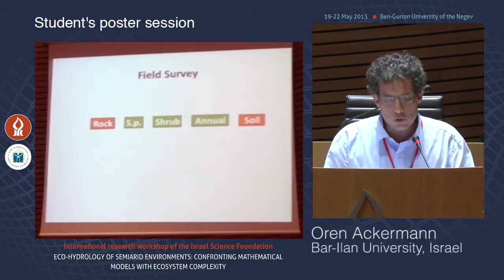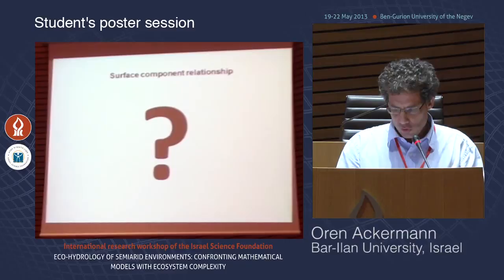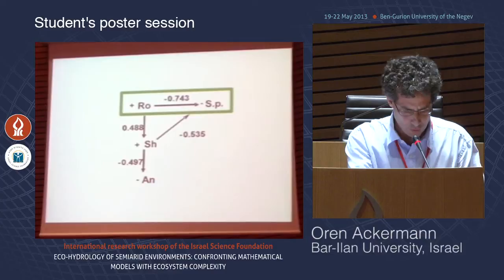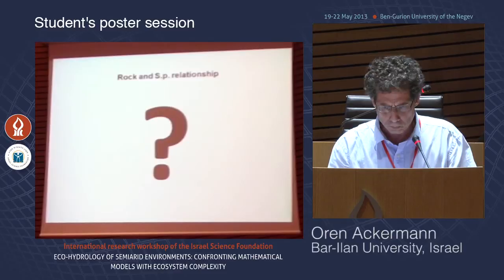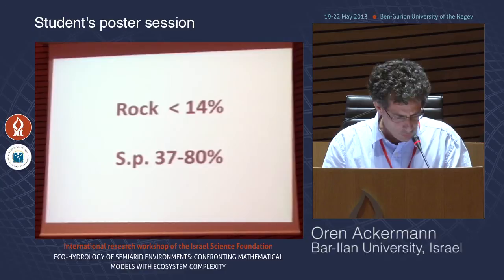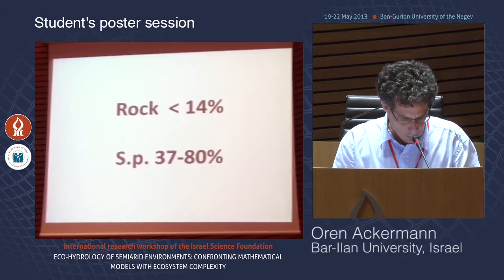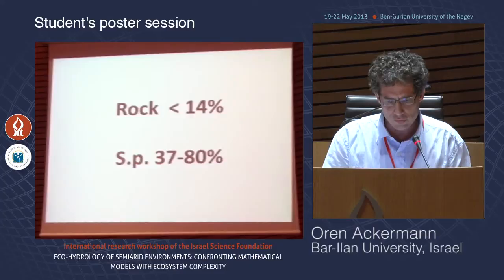Shrub, annual, and soil were measured as well. According to Pearson's test, a strong correlation was found between rock and SP. The relationship is an inverse one: when rock is less than 14% of the surface, the SP becomes a dominant component, covering 37 up to 80% of the surface.